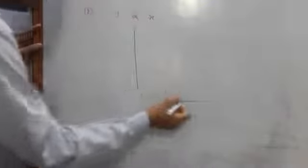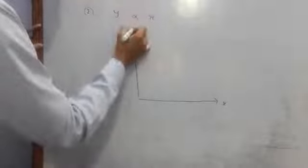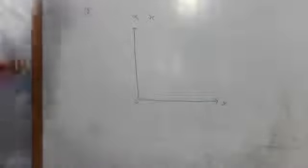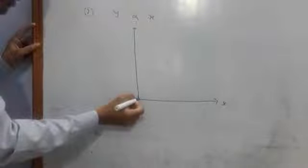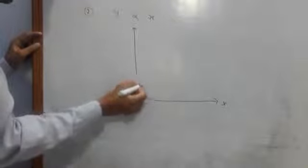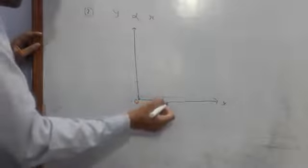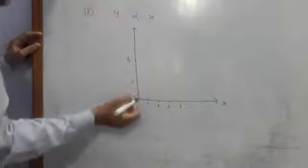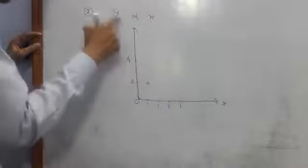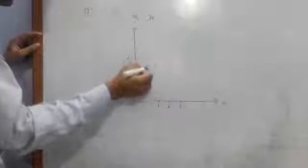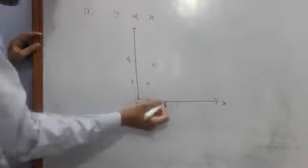Let's see how we get the graph for y proportional to x. This is our y-axis, this is our x-axis, and this is our origin. Suppose initially when x is equal to 0, y is equal to 0, so we will start from here. When x is 1, y becomes 2. When x gets doubled to 2, because there is a direct relation, y should also be doubled — so when x is 2, y should be 4.